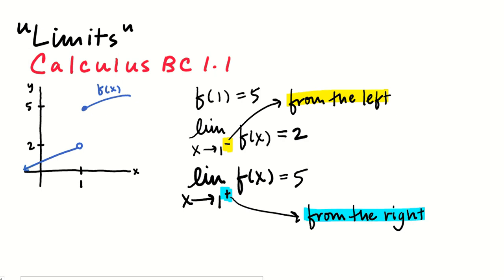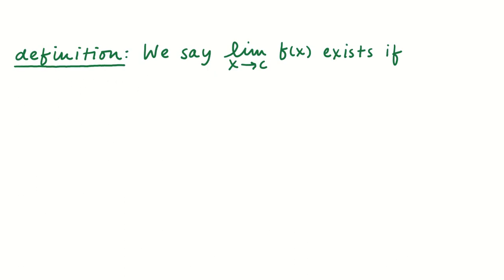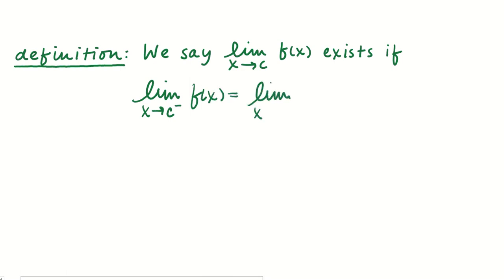Now the definition: most of the limits you're going to see in this course are not going to have the negative or positive attached to them — we're just going to consider limits of f of x as x approaches some value. We're going to say that the limit as x approaches c of f of x exists if each of the one-sided limits respectively exist and are the same. If the limit from the left equals the limit from the right, and they both equal some real number L, then the limit of f of x equals L.